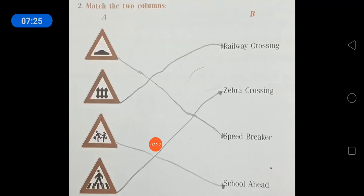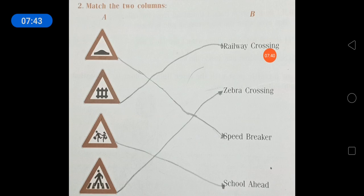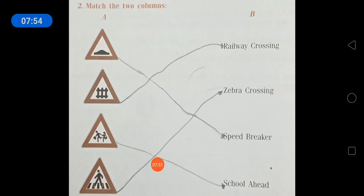Now, match the two columns. Sign boards are given that you can find on the road. This is a speed breaker. This one is a level crossing or railway crossing. This one is school ahead — that symbol indicates school ahead, so vehicles have to slow down there. And this is the symbol of the zebra crossing.